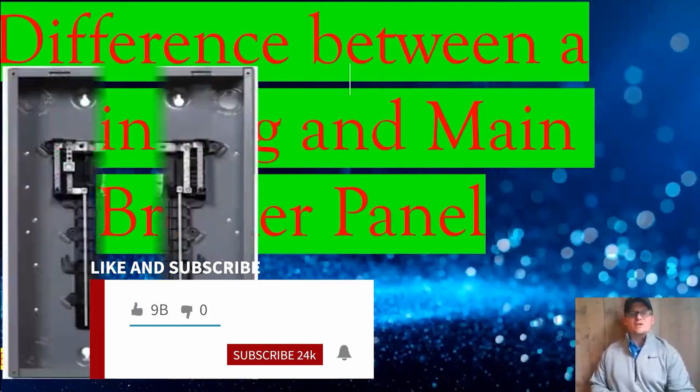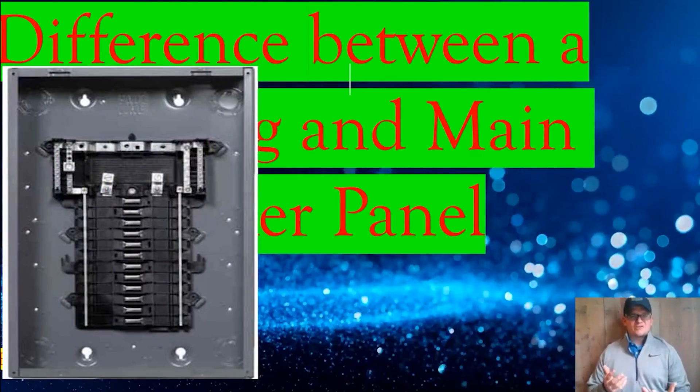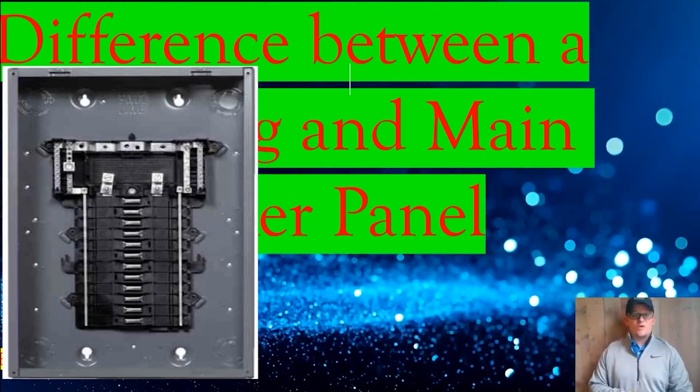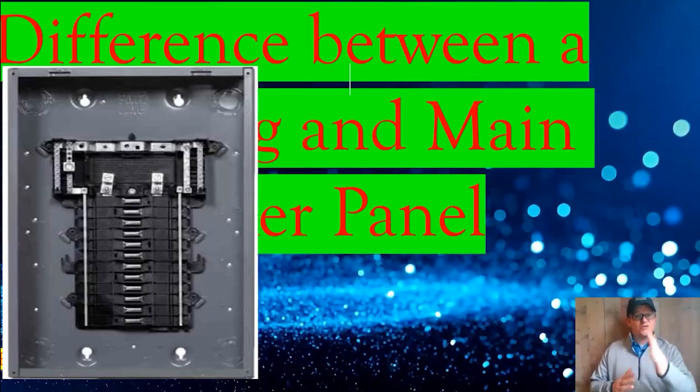So let's look at the main lug first. A main lug panel is just like it sounds. It has no breaker installed. It's literally just going to have the lugs up at the top that you terminate the main wires to. These are great for feeder panels, anywhere that's past the first point of disconnect.